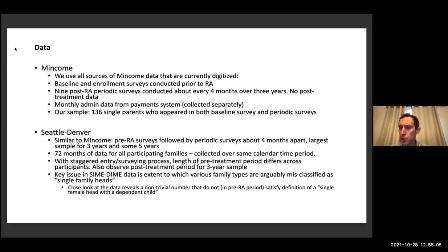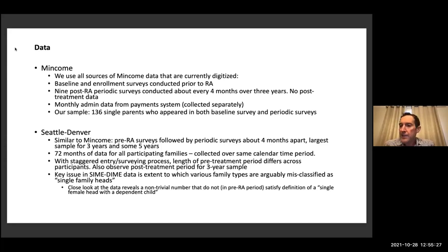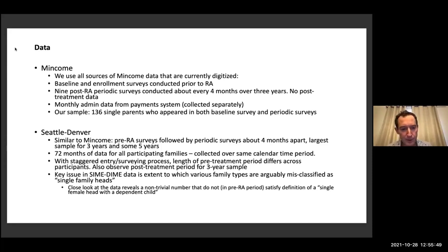The sample is small in the Manitoba experiment — not as big as Seattle and Denver, which were the largest of the NIT experiments. For Seattle and Denver, this is a different-looking dataset in that it's monthly data. The actual source of labor market information is the same in all of these: asking people to report their start and end dates of work. But what happened in Seattle and Denver — same with Gary — was that the consulting group that put together the data compiled the monthly labor market information based on those start and end dates. So the data that is publicly available, you want to think of it as basically a 72-month panel.